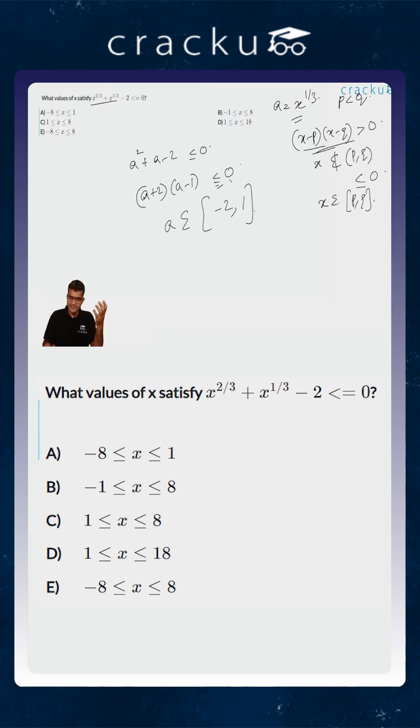But what is a? a is x to the power 1/3. So, x^(1/3) belongs to [-2, 1], or the value of x belongs to [-8, 1] which is basically the cube of the earlier interval. So, the correct answer is option a.